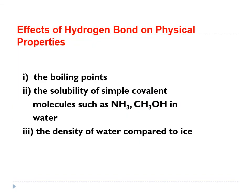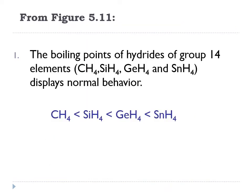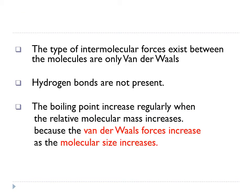Now let's look at the effects of hydrogen bonding on physical properties — boiling point, solubility of simple covalent molecules, and density of water compared to ice. Figure 5.11 shows the boiling point of hydrides of elements in groups 14 to 17. For group 14 elements — CH4, SiH4, GeH4, and SnH4 — only Van der Waals forces exist; hydrogen bonds are not present. Boiling point increases regularly as relative molecular mass increases, because Van der Waals forces increase as molecular size increases.